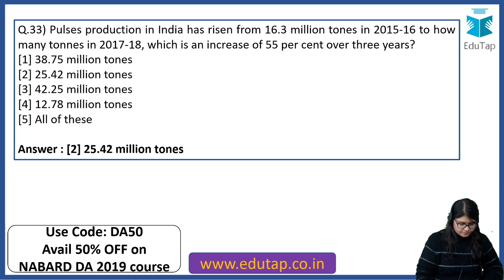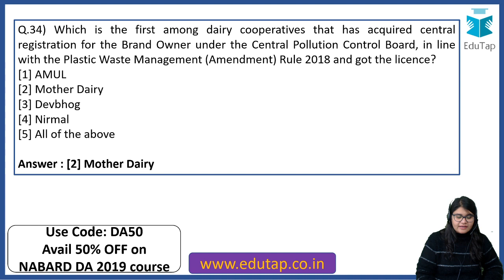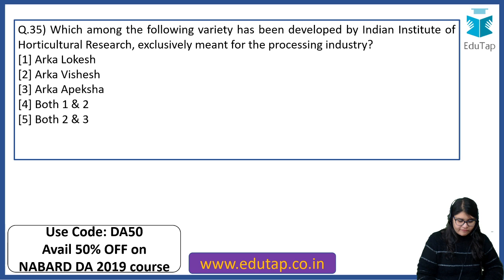Which is the first among dairy cooperatives that has acquired central registration for brand owner under the Central Pollution Control Board in line with the Plastic Waste Management Amendment Rule 2018? The answer is Mother Dairy. Which variety developed by the Indian Institute of Horticultural Research is exclusively meant for the processing industry? The right answer is both option 2 and 3 — Arka Vishesh and Arka Apeksha.